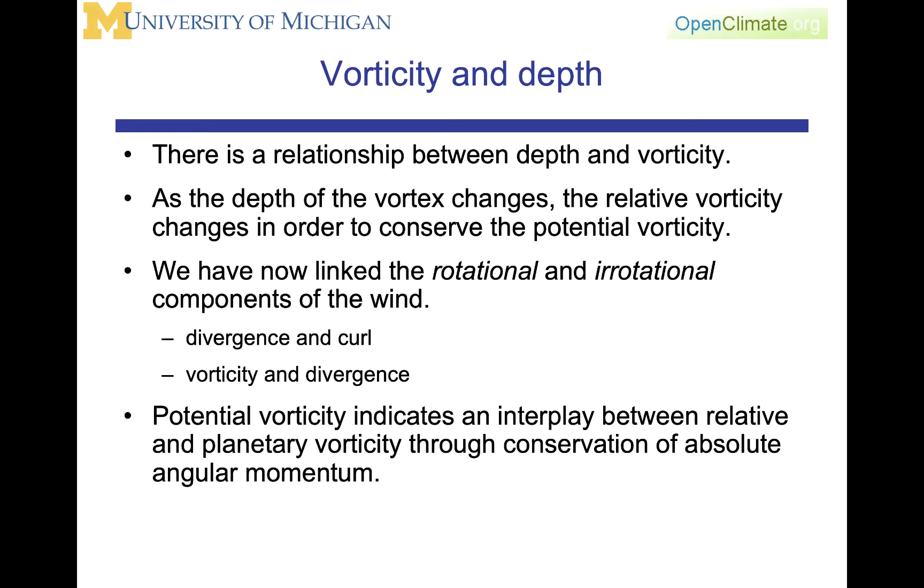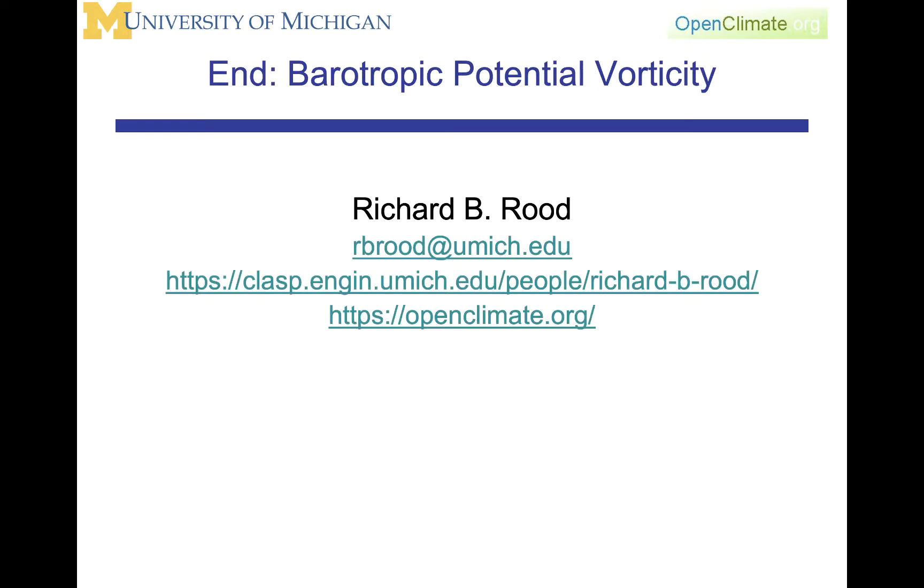What we've seen here is there is a relationship between depth and vorticity. As the depth of the vorticity changes, the relative vorticity changes in order to conserve the potential vorticity. We have now linked the rotational and irrotational components of the wind and we have this interplay between relative and planetary vorticity, which is again conservation of absolute angular momentum. And with that, that is an introduction to the barotropic vorticity equation.